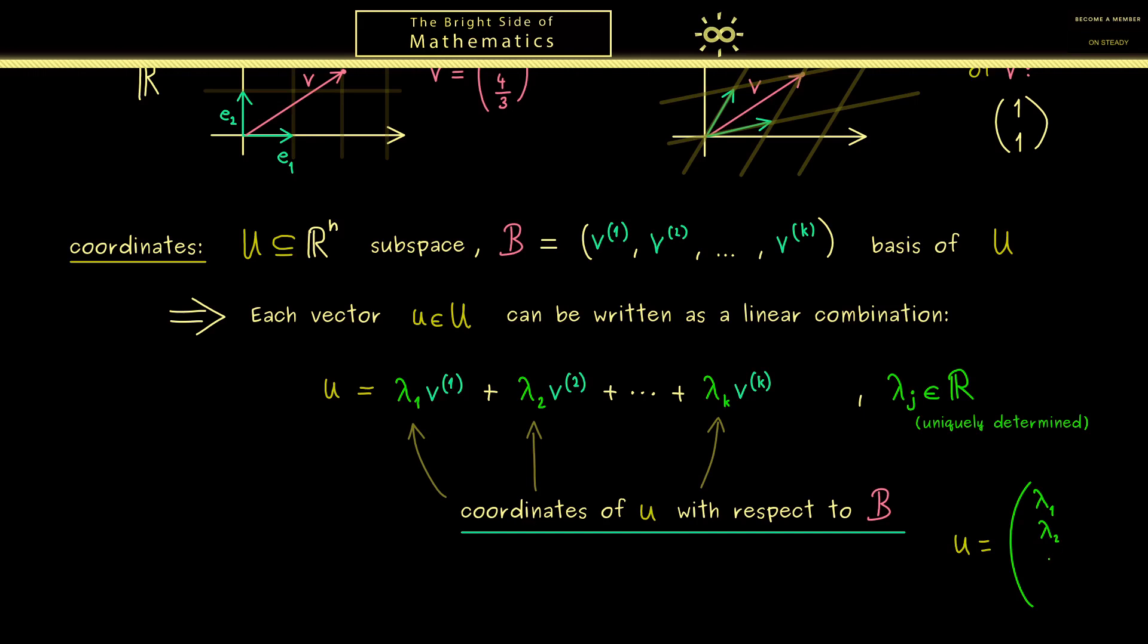One simply puts the coordinates λ₁, λ₂ and so on into a column vector. However now you see this could be definitely confusing because u is a column vector with n components. Therefore the only correct way to interpret this equality sign here is to read this column vector as this linear combination here. And in order to emphasize this one usually puts the basis B in the index.